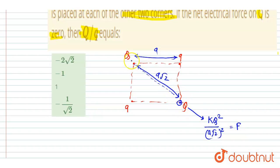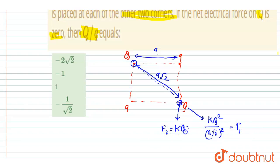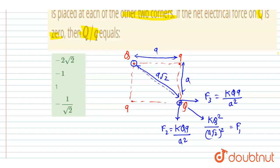This force on capital Q due to the other capital Q acts along the diagonal. Now, because of the adjacent small q charges, capital Q is acted upon by forces F2 and F3, each equal to kQq / a², since the side distance is a.